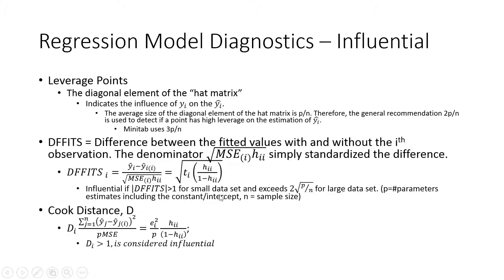Now if this value is more than one, this comes from any software, I will show you in a minute. For a small data set, if it's more than one, then it's called an influential point. If it's for large data set, 2 divided by square root of p by n, where p is the number of parameters including the constant value and n is the sample size. If it exceeds that, then it's an influential point.